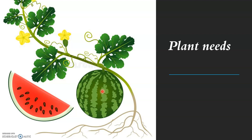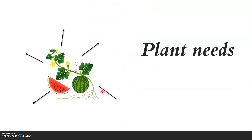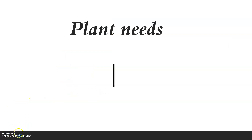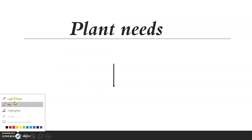So let's remember together the plant needs. Number one: water. Number two: air — carbon dioxide from the air. Number three: nutrients. Number four: space to live. And also number five: light from the sunlight.